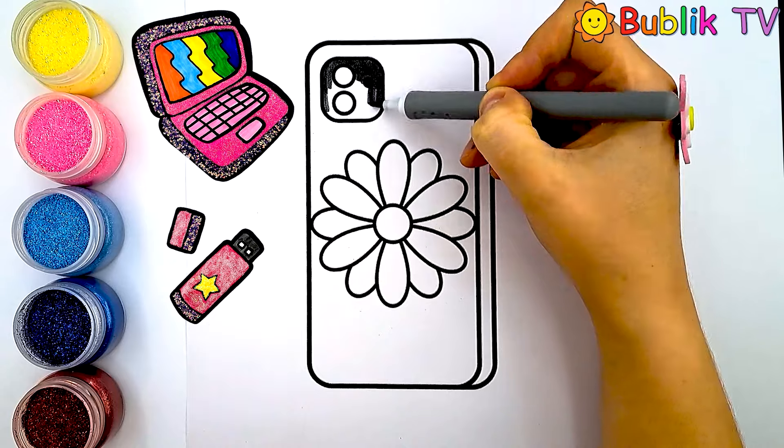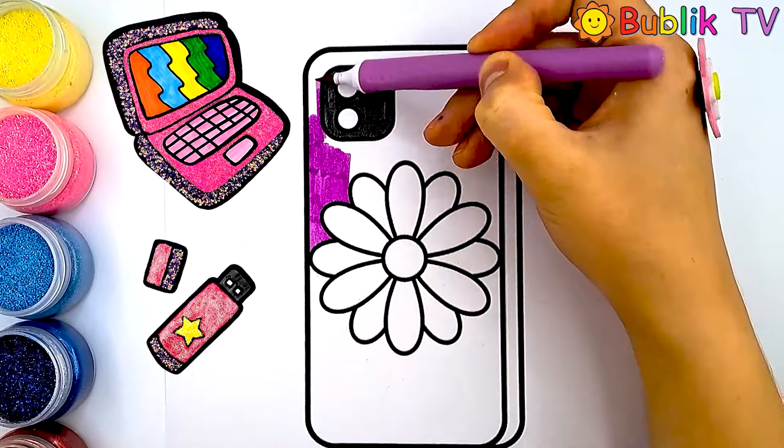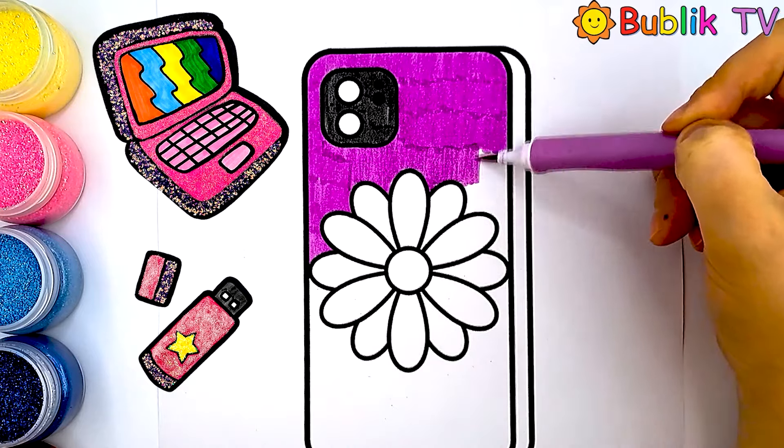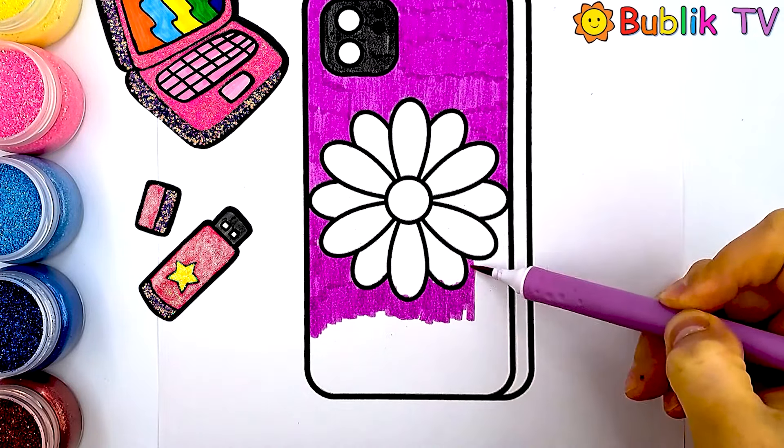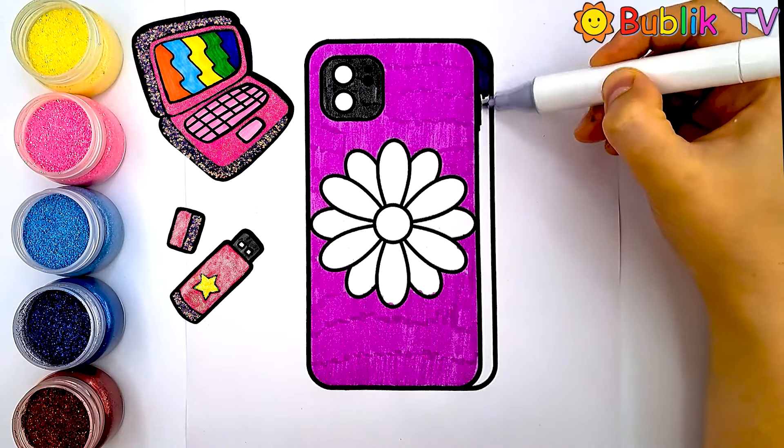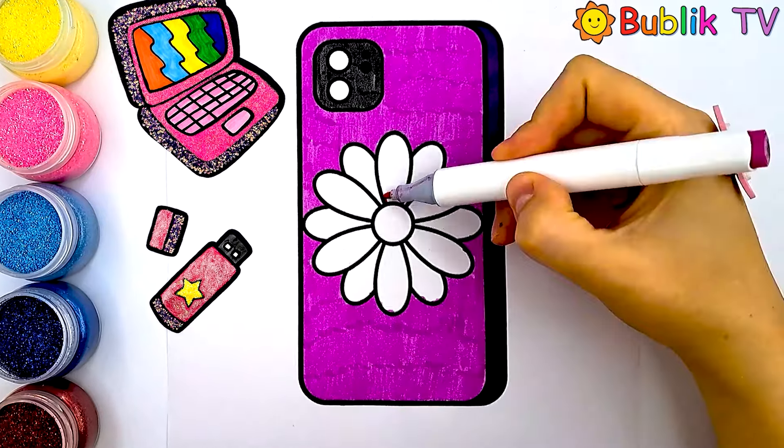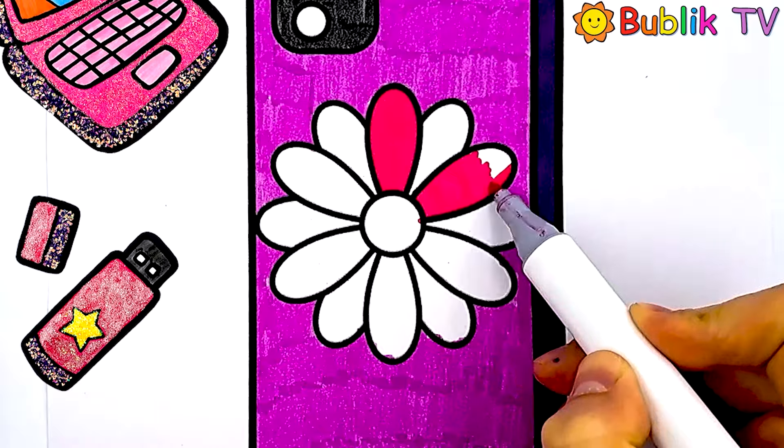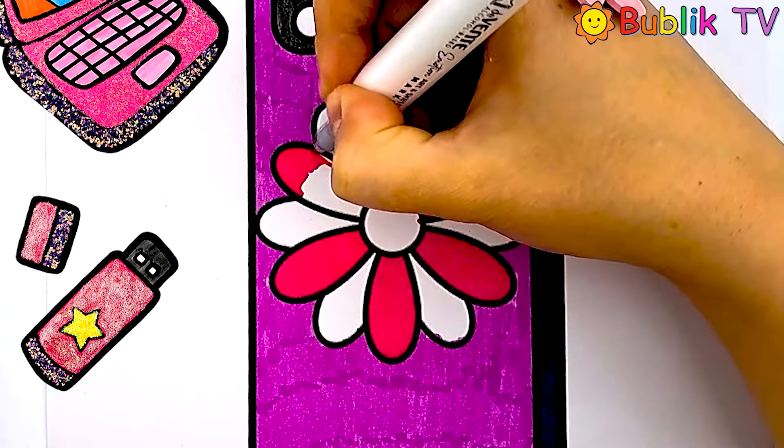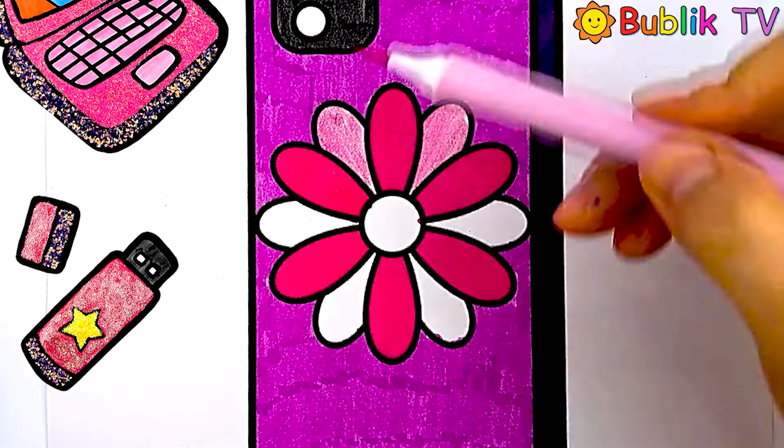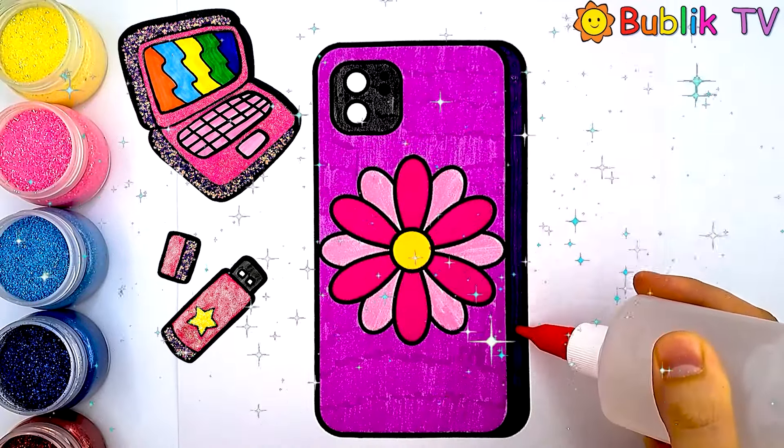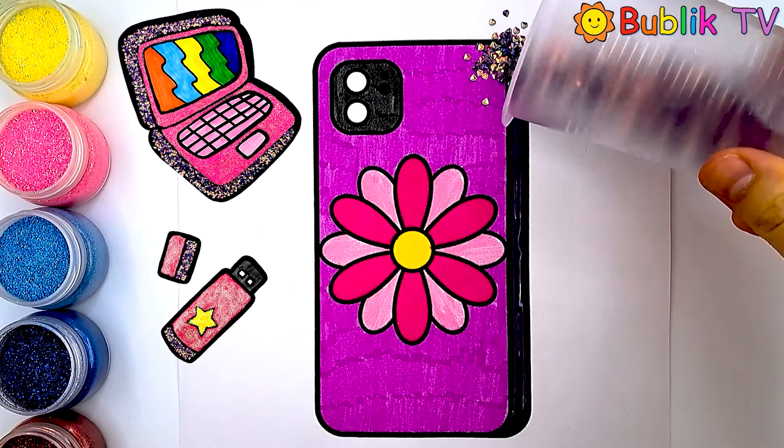Now, let's color the phone case for the girl. Gray. Violet. What do you love more, Android or iPhone? Light Pink. And sprinkle some glitter again!